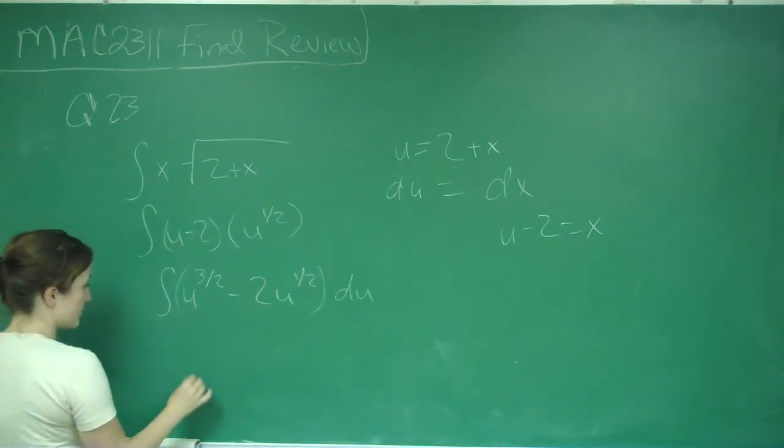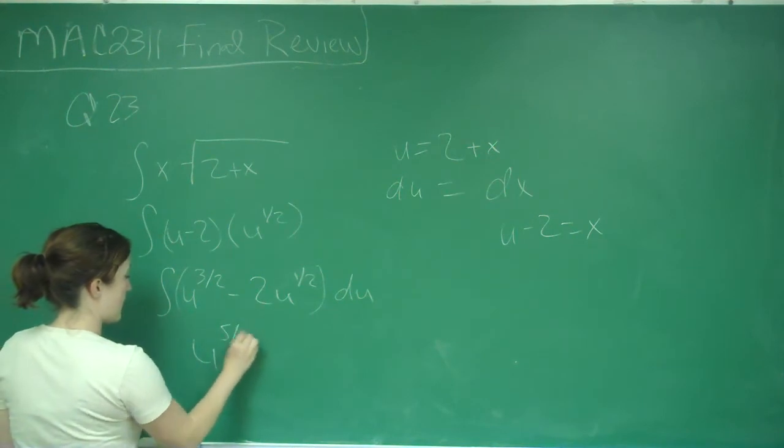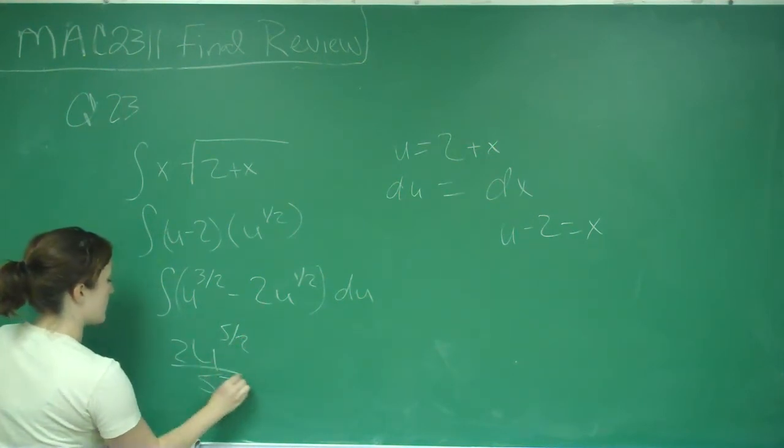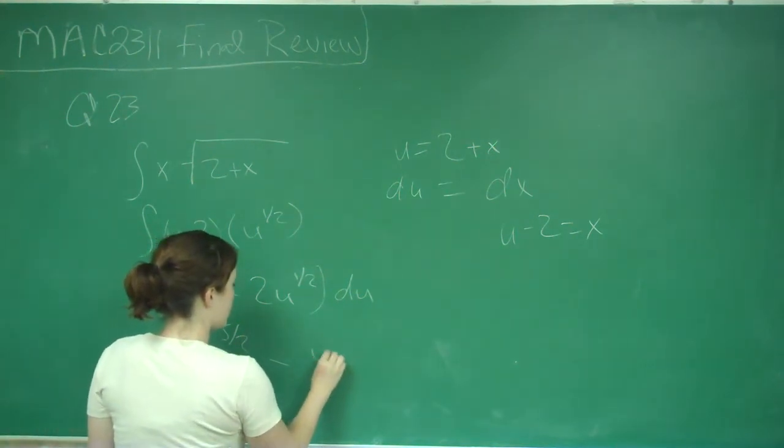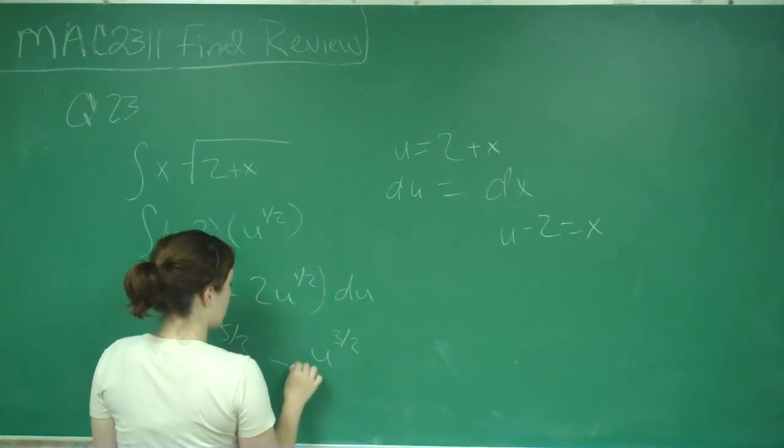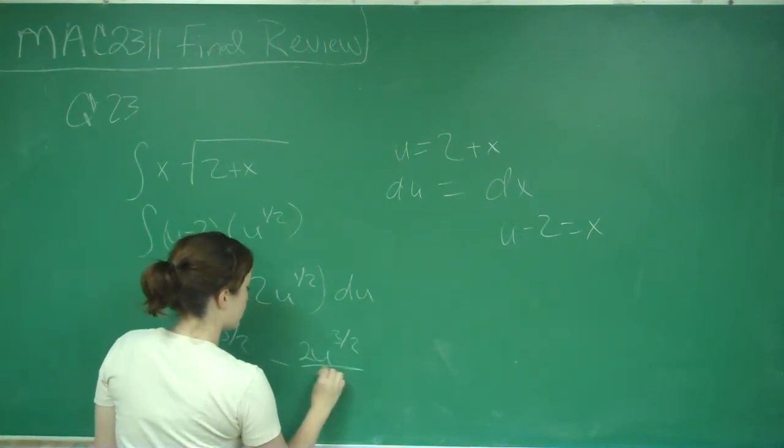This becomes u to the 5/2 times 2/5 minus u to the 3/2 times 2/3.